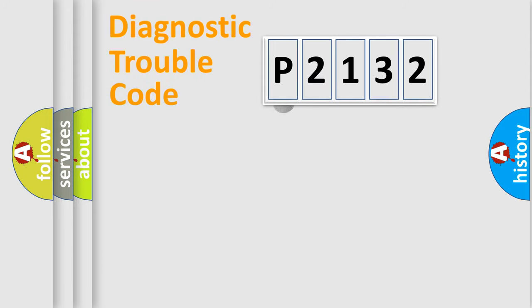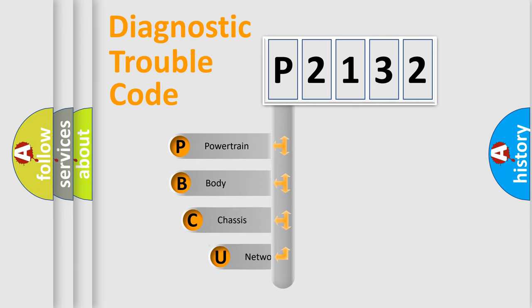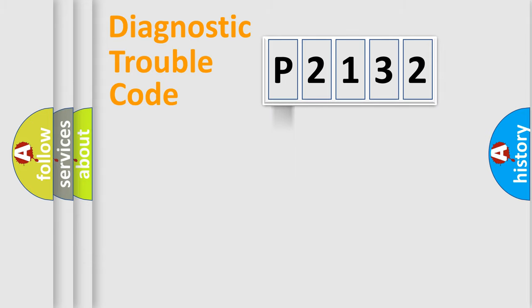First, let's look at the history of diagnostic fault code composition according to the OBD2 protocol. We divide the electric system of automobile into four basic units: powertrain, body, chassis, and network.